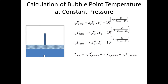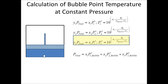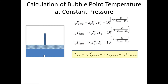Instead of varying pressure, we can hold it constant and vary temperature. We hold pressure constant and slowly increase temperature until a bubble first appears. The vapor pressure of each component is expressed using Antoine's equation at the bubble point temperature. Writing this for all three components, the total pressure equals the sum of the liquid mole fraction of each component times its vapor pressure. We must search for the bubble point temperature that satisfies this equation.